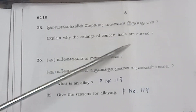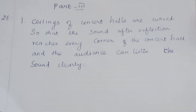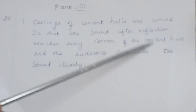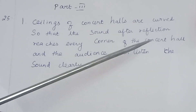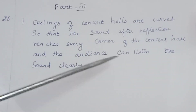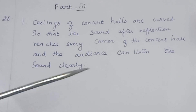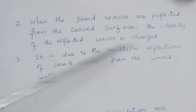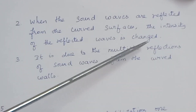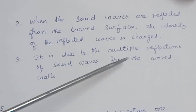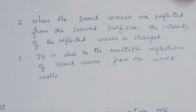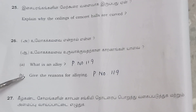Question 25: Explain why the ceilings of concert halls are curved. Ceilings of concert halls are curved so that sound, after reflection, reaches every corner of the hall and the audience can listen clearly. When sound waves reflect from curved surfaces, intensity of reflected waves changes due to multiple reflections. This carries 2 + 2 = 4 marks.